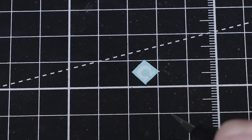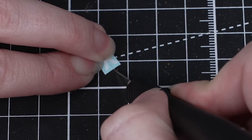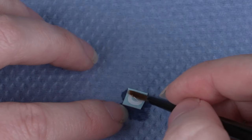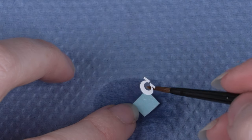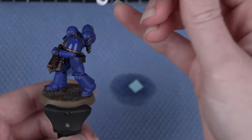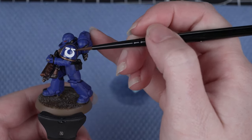Here we're applying an Ultramarine transfer to that curved shoulder pad. We'll add the cut just down the center like this. Then we apply it just like before. You might need to spend a little while positioning it and pushing it down with a damp paper towel. Once you're happy, apply the Ardcoat followed by the Lahmier Medium to complete the process.